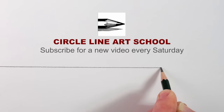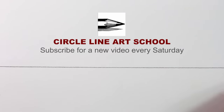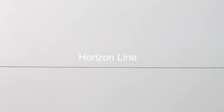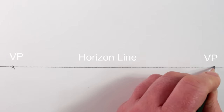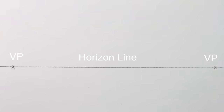Start by drawing a horizontal line slightly below the middle of your paper. This is the horizon line, which is the height of the eye of the viewer — the same height as the eye of the person looking at the view. Next, draw a vanishing point, a dot, on the far left and far right of this horizontal line. In two-point perspective, all parallel lines going left will meet at the left vanishing point, and all parallel lines going right will meet at the right vanishing point.